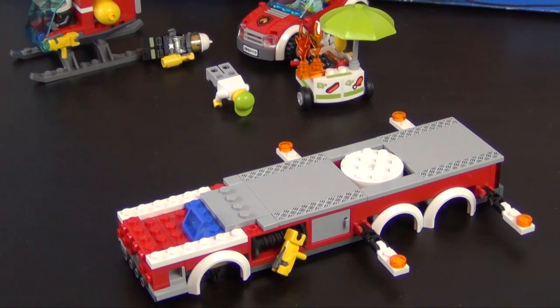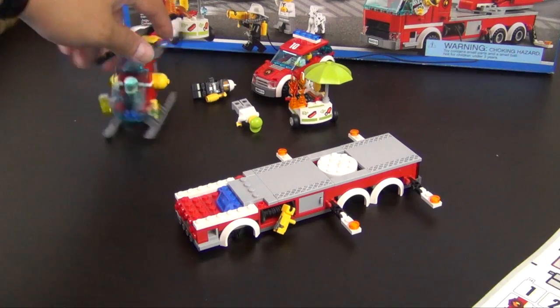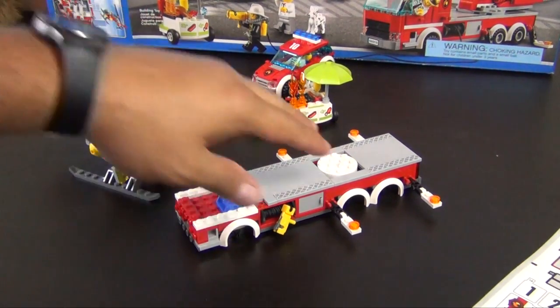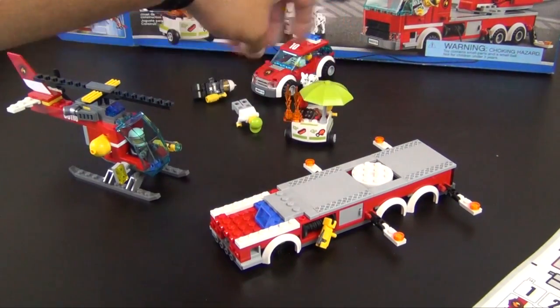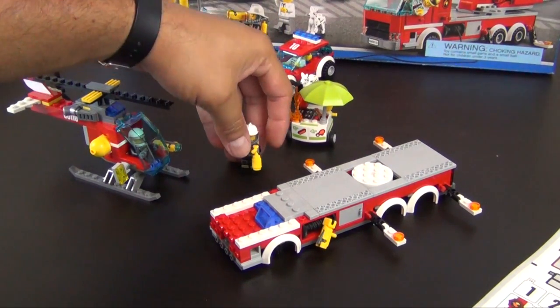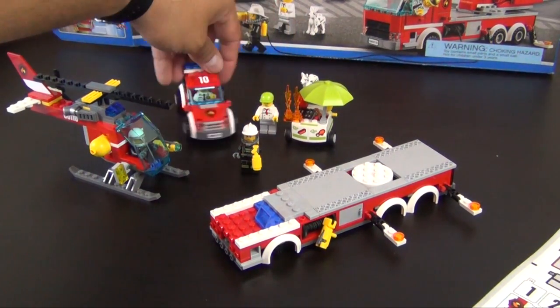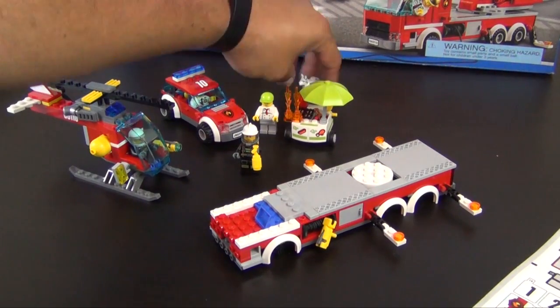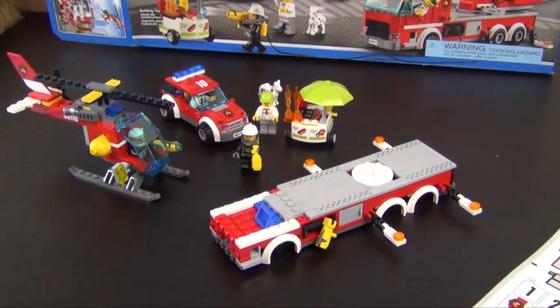Alright, so that completes bag number 3 and it's going to complete this portion of the build. So you can see what we've started with. We've got the helicopter, we've got the beginnings of the fire truck, we have a hot dog stand on fire, we have a fireman, we have the fire chief and his little chief car, and we have a Dalmatian. So a lot of stuff built already and there's a lot more to come. So make sure to subscribe, check out my other videos, don't miss part number 2 and part number 3, and we will see you in the next one.